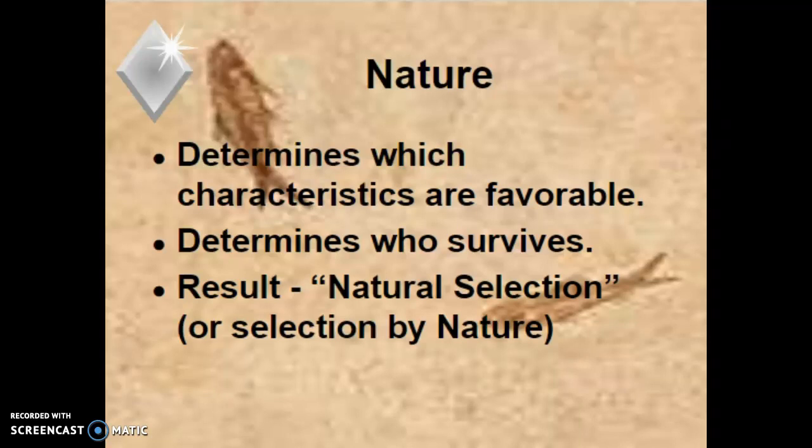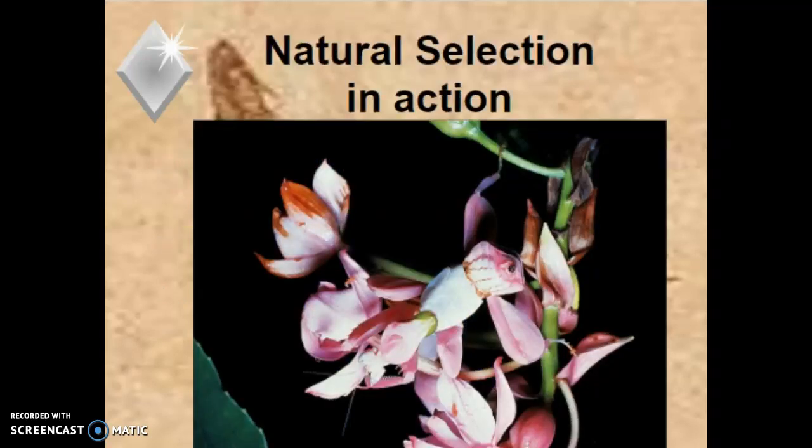Can you survive long enough to make babies, and can you convince someone else to make babies with you? If you can do those things, you get to leave offspring that look like you in the next generation. Here's a picture showing natural selection in action — somewhere on this slide there's an insect. I'm intentionally not showing you where it is. Look for it. That's a pretty good survival mechanism; we're higher-order creatures and we can't even see which one it is.